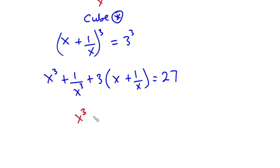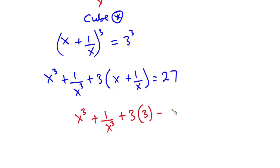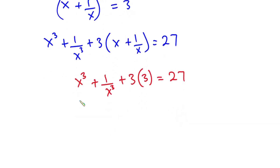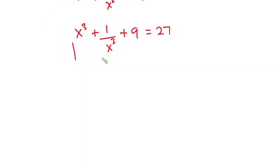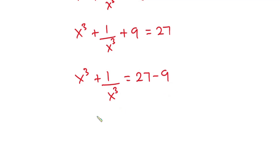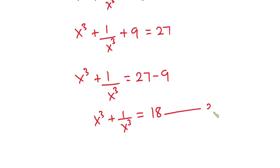So we have x cubed plus 1 over x cubed is equal to 27. Making this the subject, we have x cubed plus 1 over x cubed plus 9 equals 27, so x cubed plus 1 over x cubed is equal to 27 minus 9, which is 18. I'll call this equation 2.